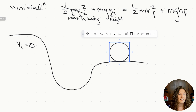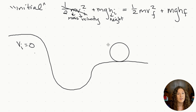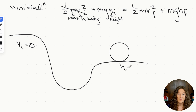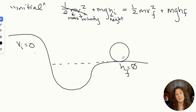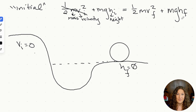Our final state is arbitrary — whatever the question defines. Importantly, the equation only captures our final kinetic energy and final potential energy; we don't care about the middle path. We can set our final height to zero because this is our defined endpoint. That makes our entire final potential energy zero, so we can remove it from the equation.